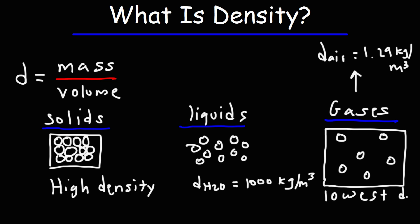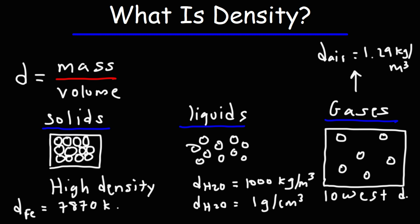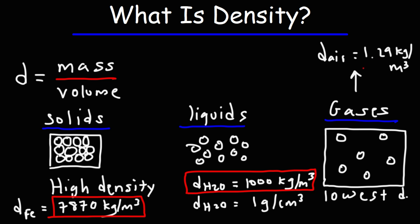In physics, density is typically reported in kilograms per cubic meter. But in chemistry, it's usually reported in grams per cubic centimeter, or grams per milliliter. To get that value, simply divide by 1,000 — so the density of water is 1 gram per cubic centimeter. Now let's compare that to the density of a solid like iron metal. The density of iron is about 7,870 kilograms per cubic meter. As you can see, solids have a much higher density than liquids, and liquids have a much higher density than air.